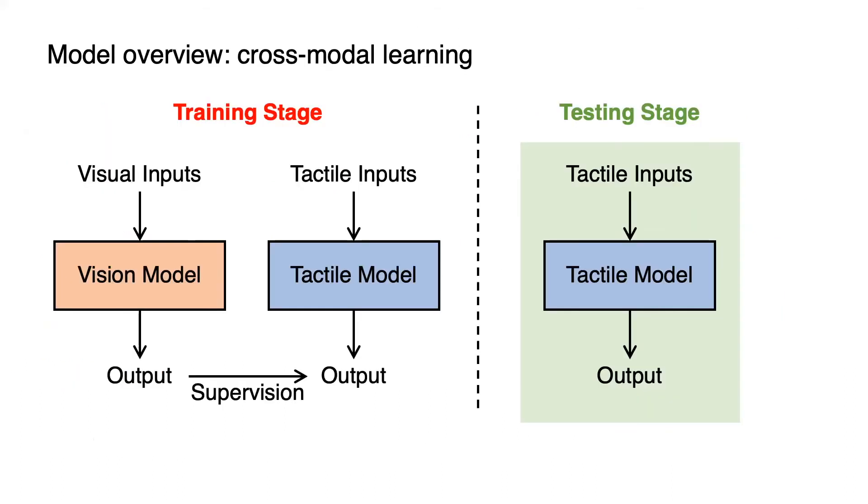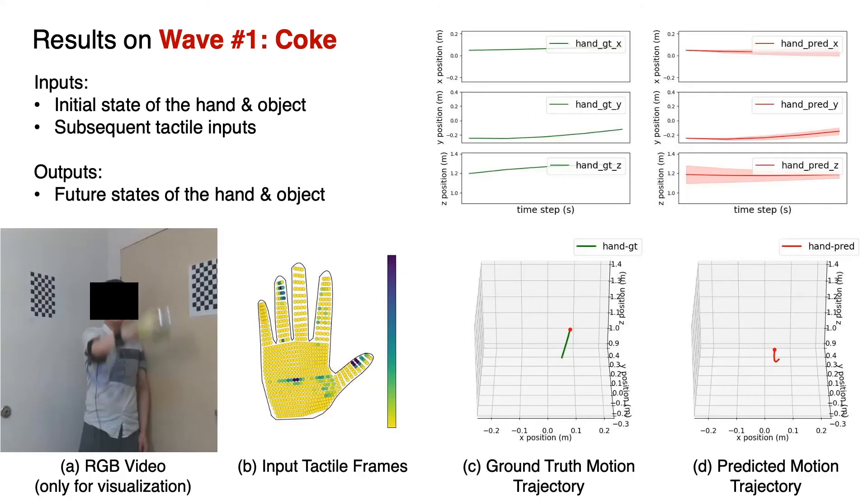During test time, we do not have to rely on the visual inputs and can use our learned tactile model to predict the system's evolution by only taking the tactile information as inputs. Here we show the results on the wave activity. The inputs to our model are the initial state of the hand and the object, as well as the subsequent tactile inputs. The outputs are the future states of the hand and the object.